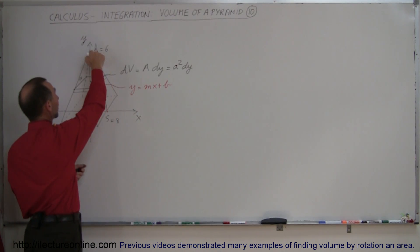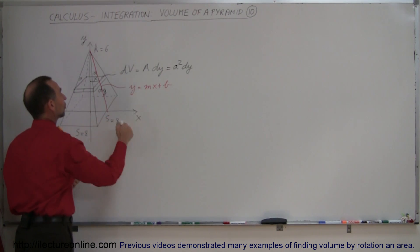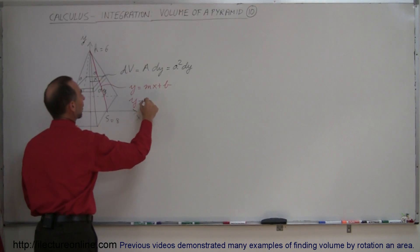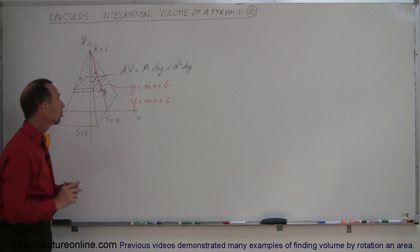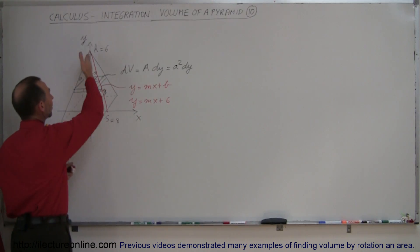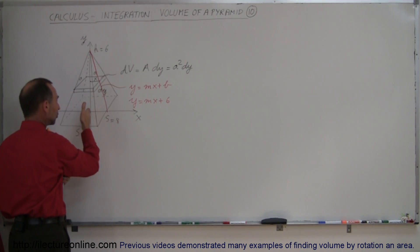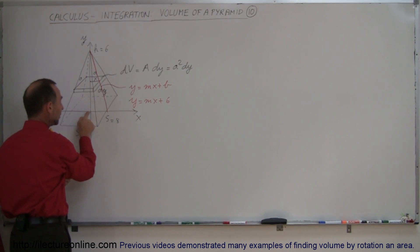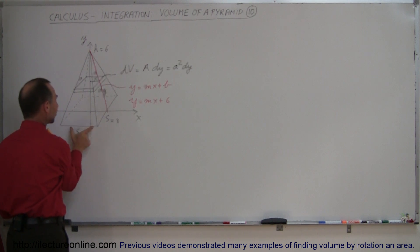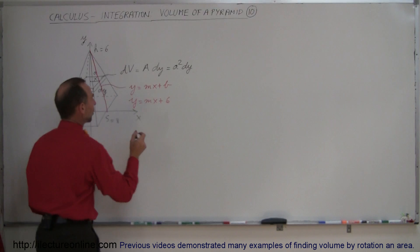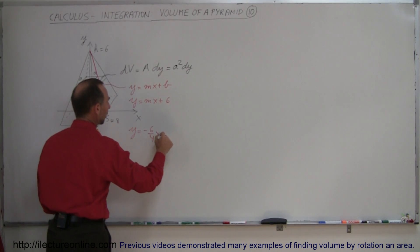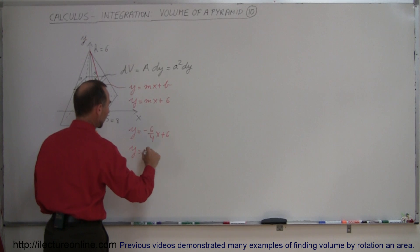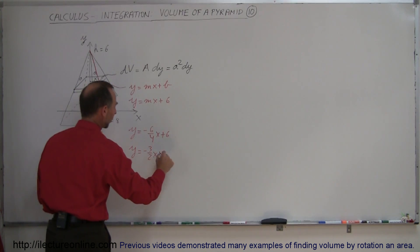The intercept is easy — that is right where it crosses the y axis, so we know that y is equal to mx plus 6. What about the slope? Well, the slope is the rise over the run. In this case, the rise is negative 6 because we drop, and the run is half the base of the pyramid from the center to the edge, which would be 4. So that would be y equals minus 6 over 4 times x plus 6, or y equals minus 3 over 2 times x plus 6.